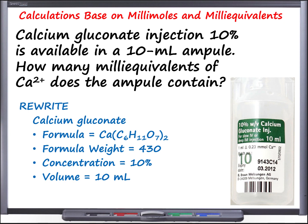In non-acute settings requiring mild-to-moderate calcium replacement — such as in total parenteral nutrition — calcium gluconate is preferred because it has a lower potential for infusion site reactions compared to calcium chloride. The formula for calcium gluconate contains one calcium ion and two gluconate ions, with a formula weight of 430. Our 10% w/v ampoule contains a total volume of 10 mL.